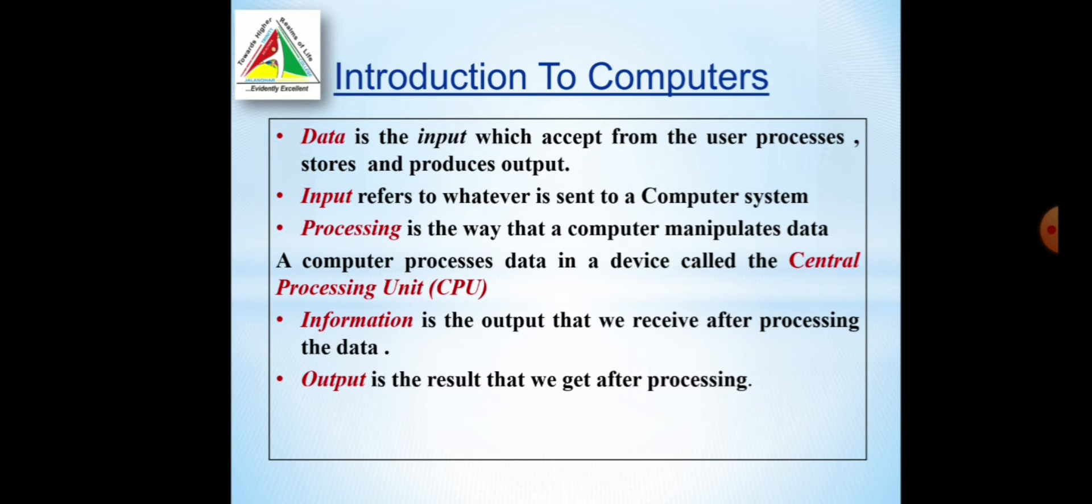Processing happens in a special place called central processing unit. In that central processing unit, the task is performing to change this data into information. After converting this data into information, we get a meaningful result that is called output.